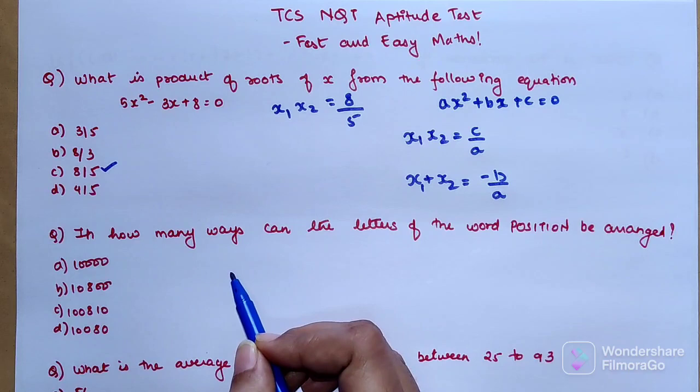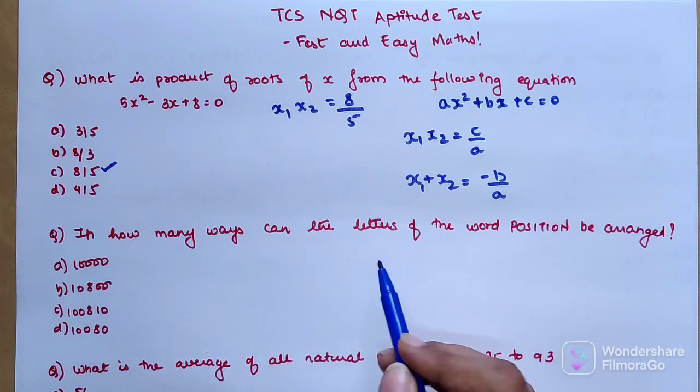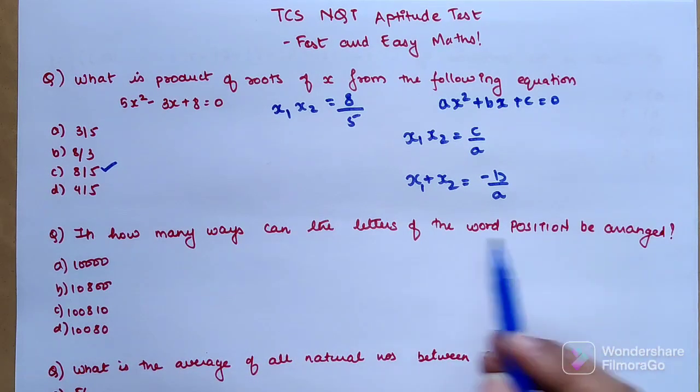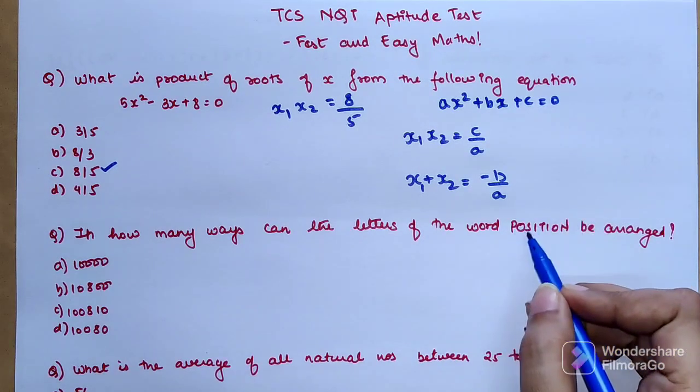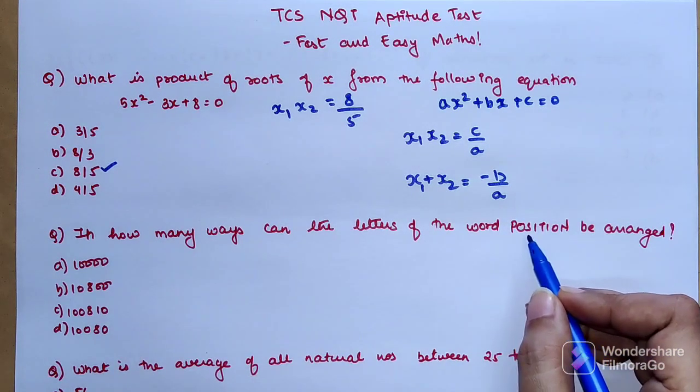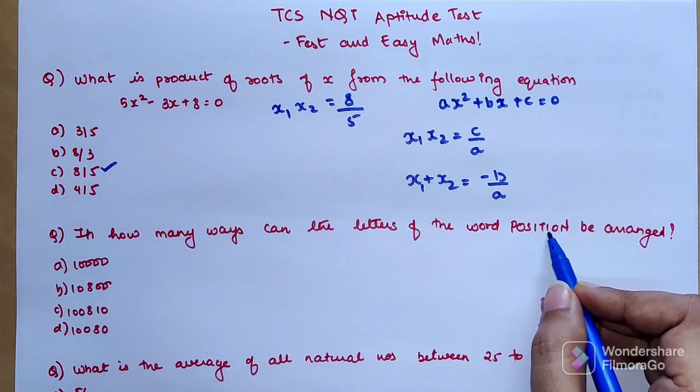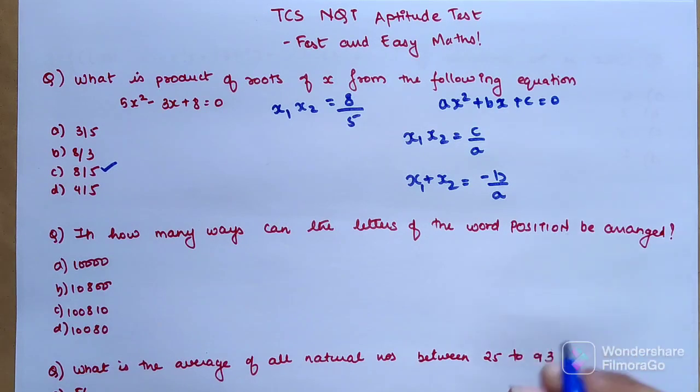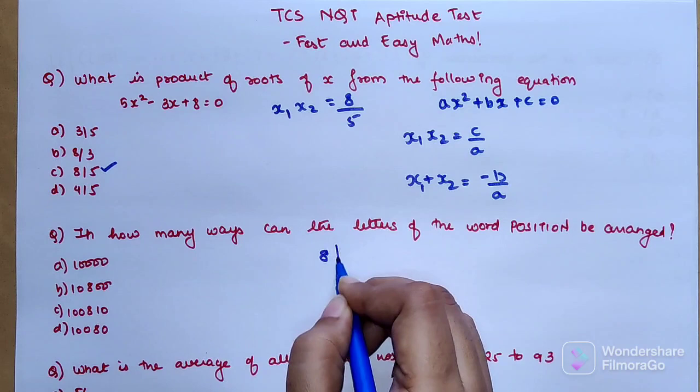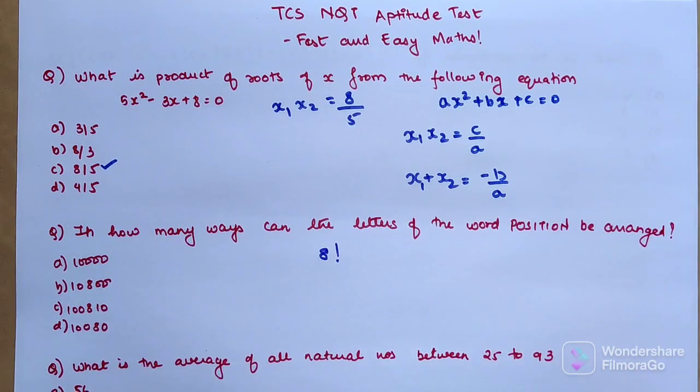Next question: In how many ways can the letters of the word POSITION be arranged? First, count how many letters there are: one, two, three, four, five, six, seven, eight. We have eight letters, so they will be arranged in 8! ways.